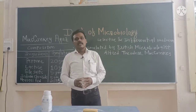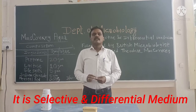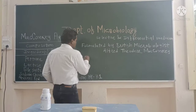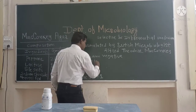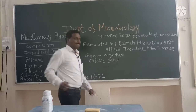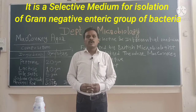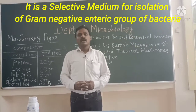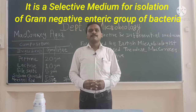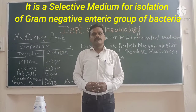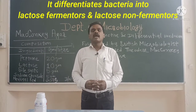MacConkey's Agar is a selective as well as a differential medium. It is selective because it is selective for the isolation and differentiation of gram-negative and enteric type of bacteria. It is used for selective isolation of gram-negative rod-shaped bacteria and the enteric group of bacteria, particularly the members of the family Enterobacteriaceae.